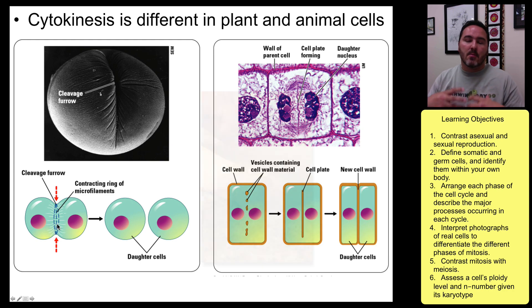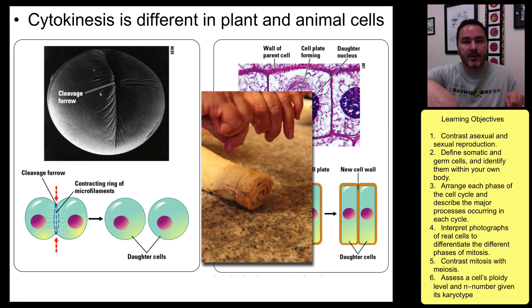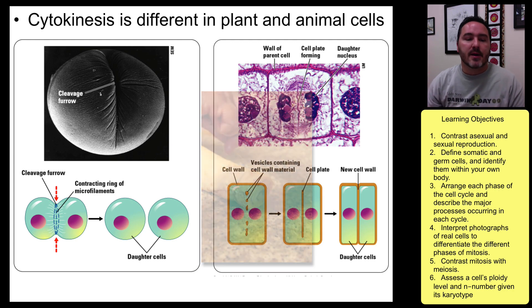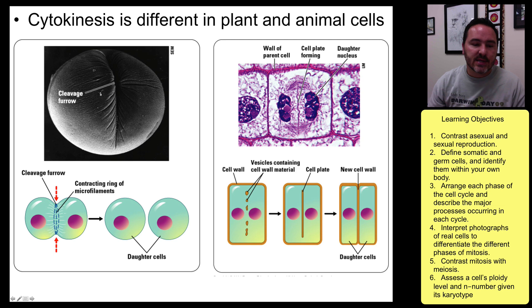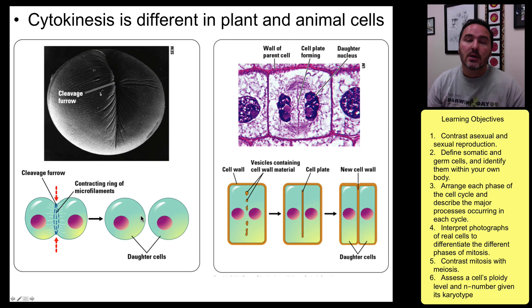I remember when my grandma used to make cinnamon rolls and she would use a piece of thread — put it underneath the roll, put it on the top, cross it, and just pull. It would pull that cinnamon roll apart. That's essentially what's happening with this constricting ring of microfilaments. You end up with two daughter cells, each with a complete set of chromosomes identical to the parent set.